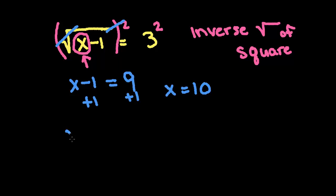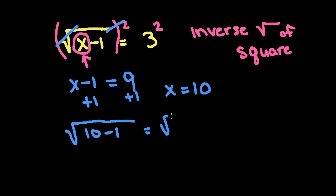And if you plug it back in, you can see that 10 minus 1 equals the square root of 9, which gives me 3 — which is the answer I was looking for.